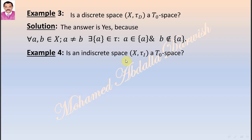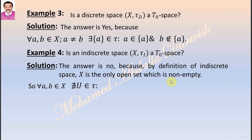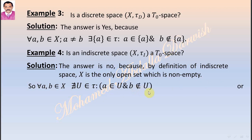Example 4: Is an indiscrete space (X, τ_I) a T₀ space? The answer is no, because by definition of an indiscrete space, X is the only open set which is non-empty. So for all A and B in X, there is no open set U such that A is in U and B is not in U, or A is not in U and B is in U.